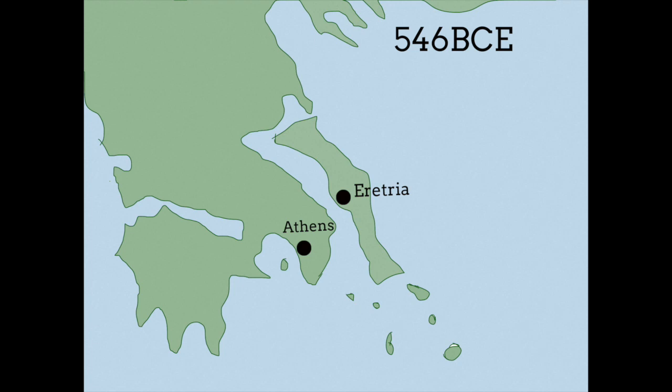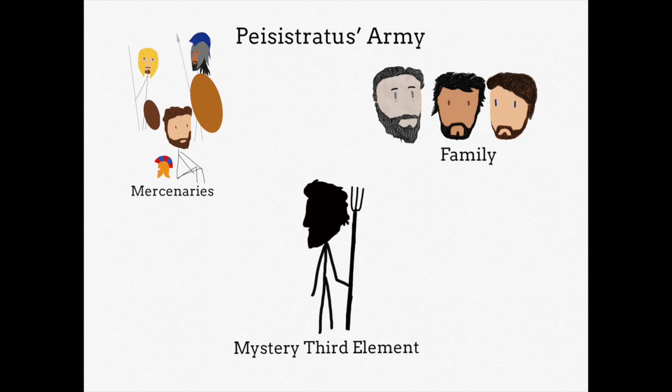And so in the tenth year of his exile, Pisistratus, his sons Hepaeus and Aparchus, and his new ally Ligdamas, along with thousands of Argive and Naxian mercenaries, all set sail from Eritrea and landed on the shores of Attica. Here is where the third element of Pisistratus's army came to join him, the people of Attica.